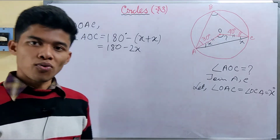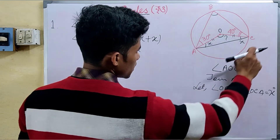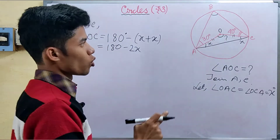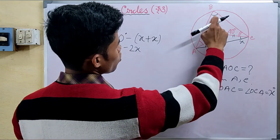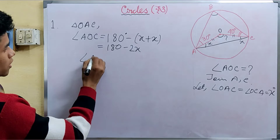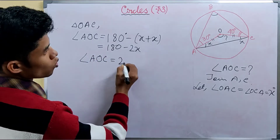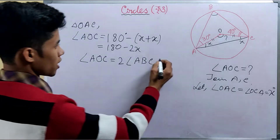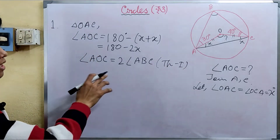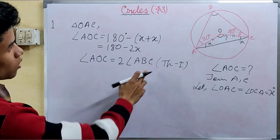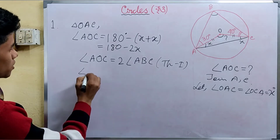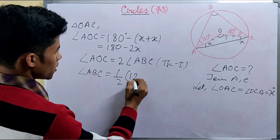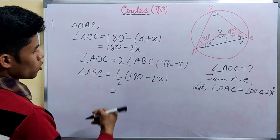Now we apply the first theorem. The first theorem states that the central angle AOC is equal to twice the inscribed angle ABC — that is, AOC equals twice ABC. So AOC equals 180 minus 2x.